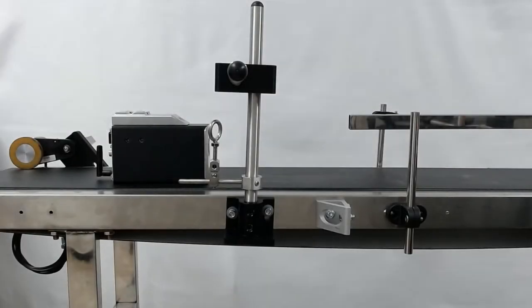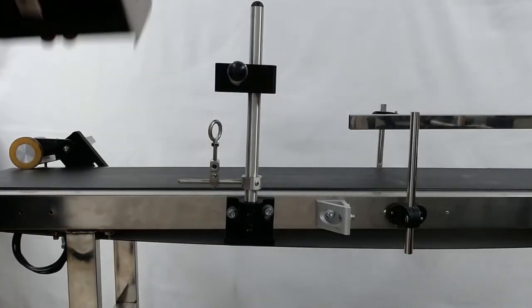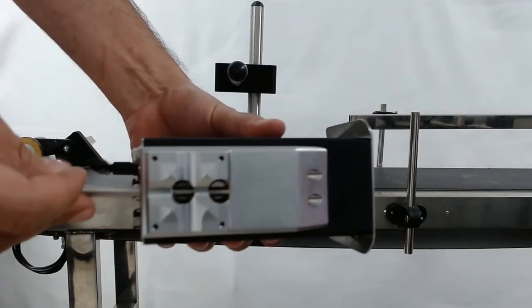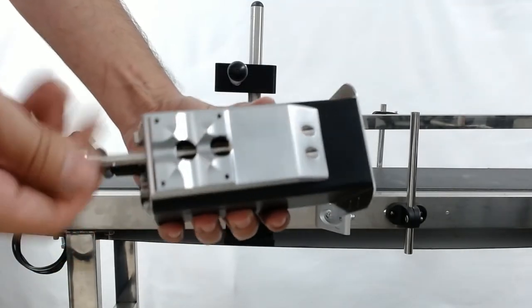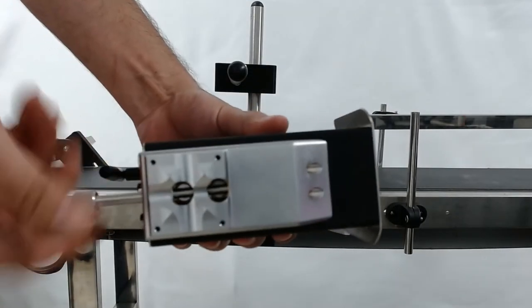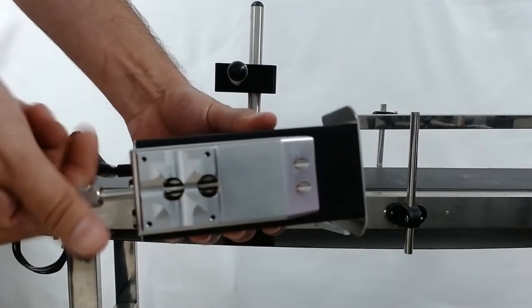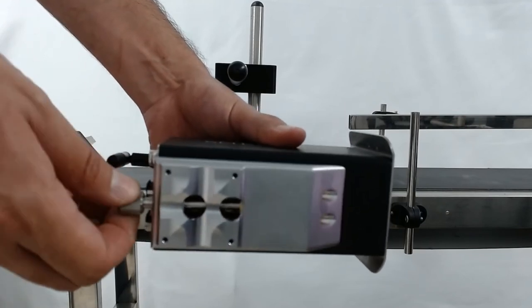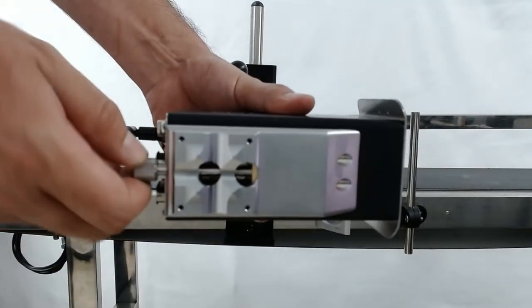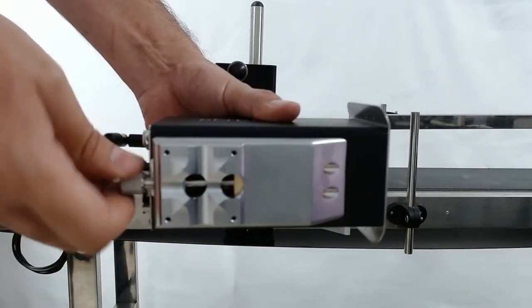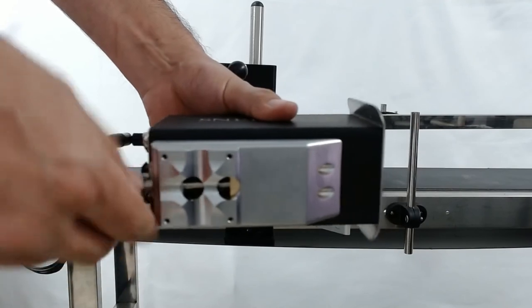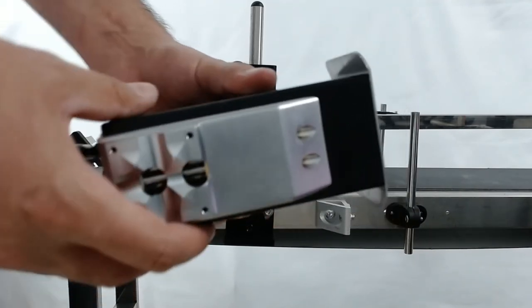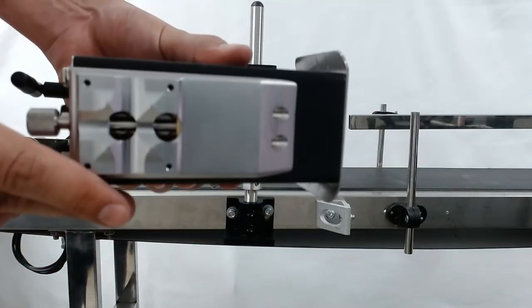Now that we've done that, we can put our thumb screw back in. What this does is it allows us to get just millimeter movement to the printer up or down. You'll see as I turn this screw, the entire mechanism moves down the printer, and as I turn it counterclockwise back up. We're going to put the plate we removed back over here because that's how we're going to clamp it to the bar.